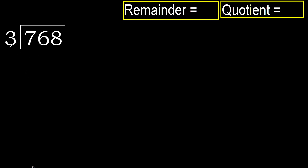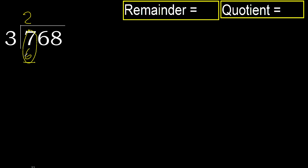768 divided by 3. Starting with 7: 3 multiplied by which number is nearest to 7 but not greater? 3 multiplied by 3 is 9, which is greater. Multiplied by 2 gives 6, which is not greater. Subtract: 7 minus 6 is 1.